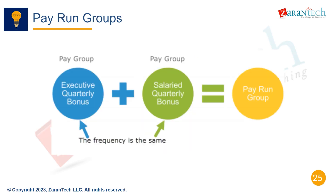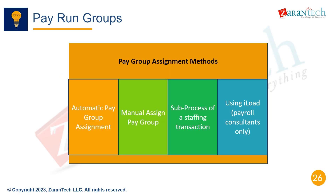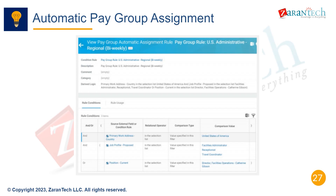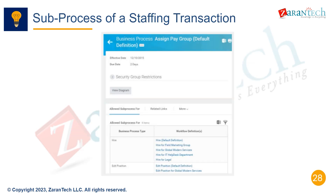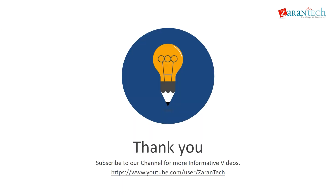Pay Run Groups allow scheduling multiple pay groups to run together. Workers can be assigned to pay groups automatically, manually through staffing event subprocesses, or using iLoad. Eligibility rules can automate pay group assignment for workers meeting certain criteria, and pay group assignment can be configured as a step in staffing event subprocesses.